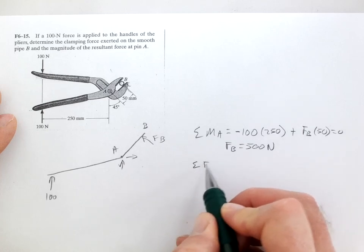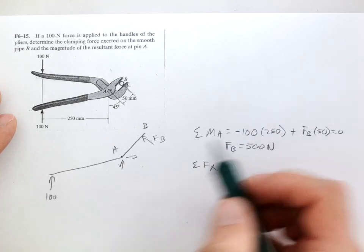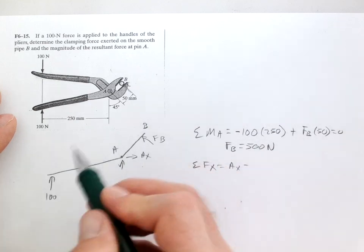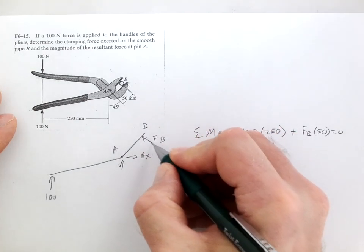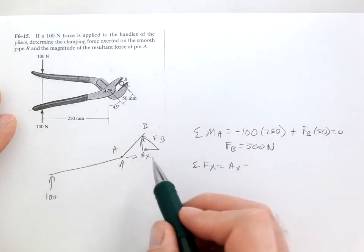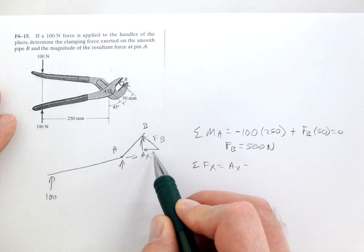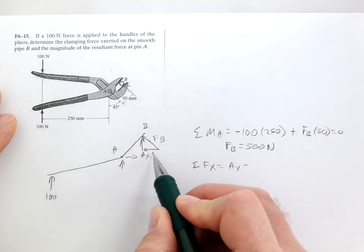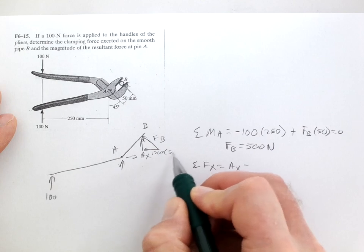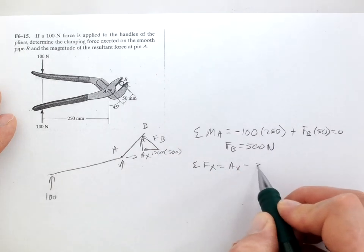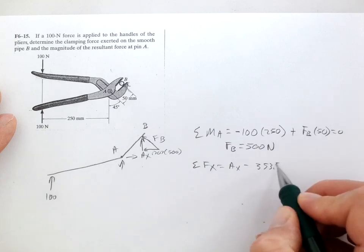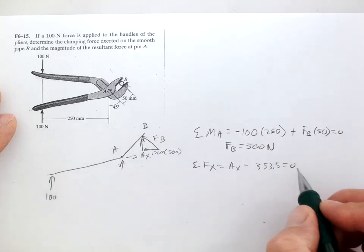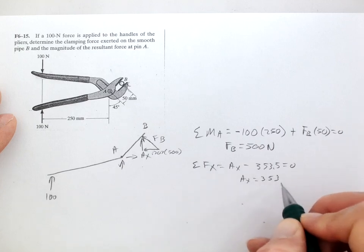Now let's sum the forces in the x direction. We're breaking this FB into components. The x direction, that's a 45 degree angle, so Ax equals 0.707 times 500, which is 353.5 newtons.